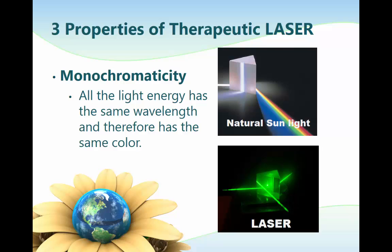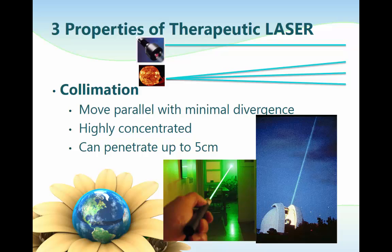Monochromicity is defined as having a single frequency and therefore a single color within the light spectrum — all of the light energy has the same wavelength and therefore the same color. Laser light is collimated because it diverges very little as it travels through space. The photons move parallel with minimal divergence, meaning the beam is highly concentrated. Due to collimation, the laser beam can penetrate up to 5 cm in human tissue.